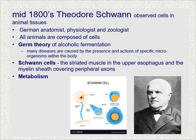Schwann also studied metabolism and discovered a type of cell found in the upper esophagus called Schwann cells. Schwann cells are a type of glial cells in the peripheral nervous system that help to form the myelin sheath around nerve fibers. A Schwann cell envelops and rotates around the axon, forming that myelin sheath.